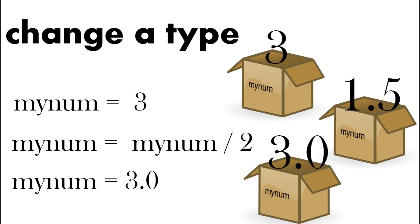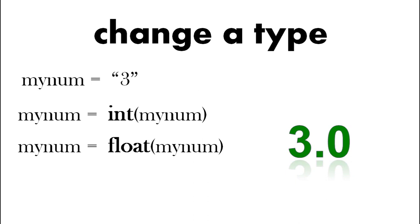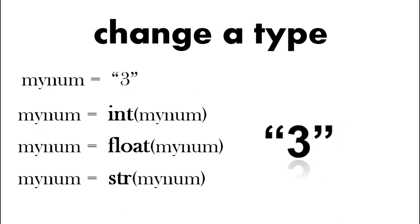So let's have a look at how you can change a type. So mynum equals the digit three in a string. You see the double quotes means it's a string. We want to change that into an integer. So we use int with brackets. So we've got mynum equals int(mynum). So now it's changed to a number, to an integer. So here we have float(mynum) and now we know the number's a float. And we can change it back to a string again. So we've used int, float, and string with brackets and the variable inside the brackets to change the type.